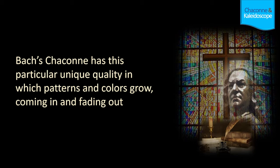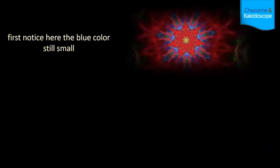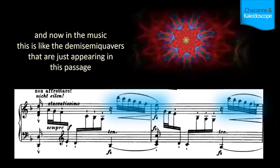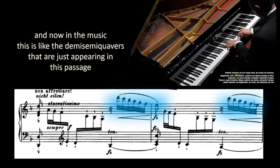Bach's Chaconne has this particular unique quality, in which patterns and colors grow, coming in and fading out. I am going to show you a few examples. First, notice here the blue color, still small. And in the music, this is like the demi-semiquavers that are just appearing in this passage.